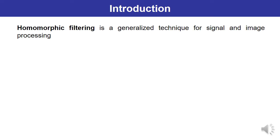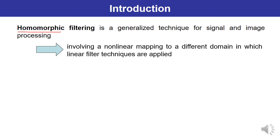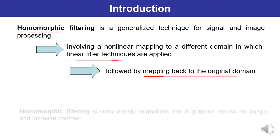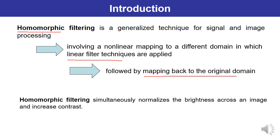First you need to understand what is homomorphic filtering. The term 'homomorphic' means similar in nature, a similarity in between. Homomorphic filtering is defined as a generalized technique for signal and image processing, involving a non-linear mapping to a different domain in which linear filter techniques are applied, followed by mapping back to the original domain. So the original image is mapped to a different domain, a linear filter is applied, and then the original image is reconstructed.